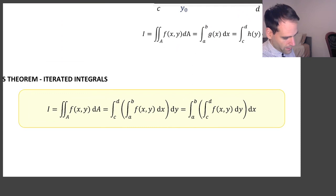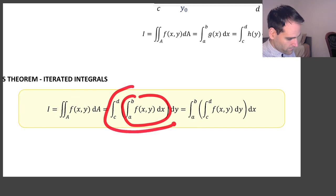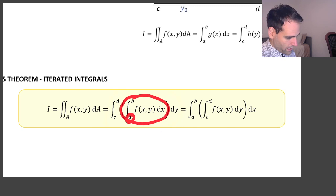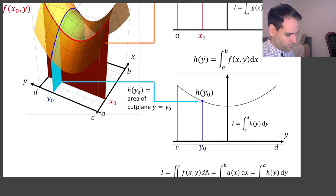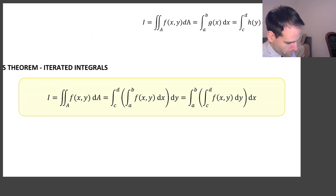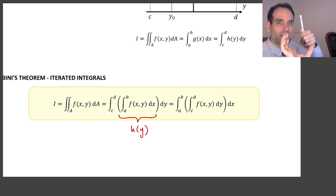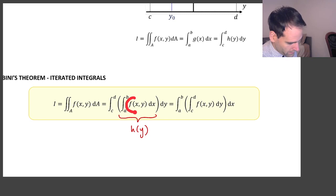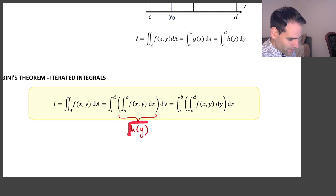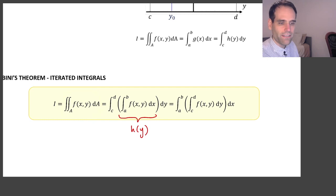So Fubini's theorem tells us that the double integral of f(x,y) on an area A is simply an integral inside of another integral — an integral in x between x = a and x = b, and the result of that is a function of y. When you do an integral with respect to a certain variable, that variable disappears — the integral of f(x,y) along x loses the dependence on x, so we have a function that depends on y. That function we then integrate along y, giving us the volume under the original surface f(x,y), which is the double integral.